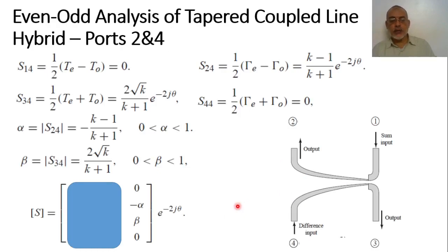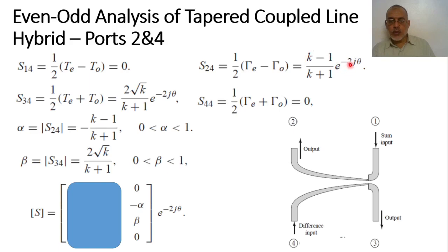The fourth column of the scattering matrix is therefore: S₁₄ = 0, S₂₄ = −α·e^(−j2θ) where k−1 over k+1 equals −α (since K < 1), S₃₄ = β·e^(−j2θ), and S₄₄ = 0.